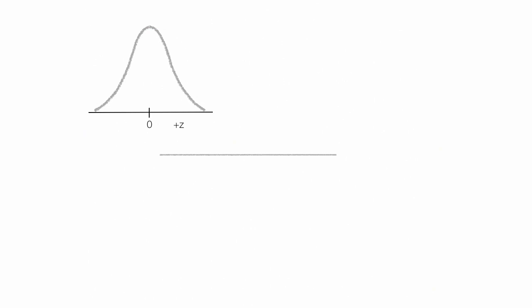Normalized tables usually have one, two, or three values in them, and if you know one of the values, you can get the rest of the values. In other words, they're all interrelated. So if your z-score is 1.96, it would be right there where I've just placed it.